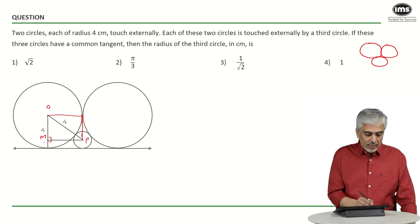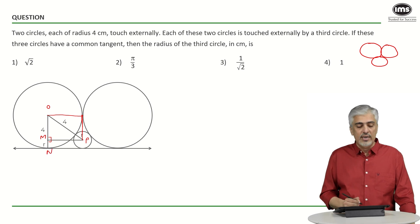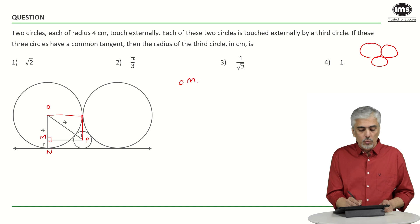Now, this part will also become R, MN if you want to call it. MN will also be R. And hence, OM which I want will be 4 minus R. OP will be 4 plus R. And we know MP will be 4.